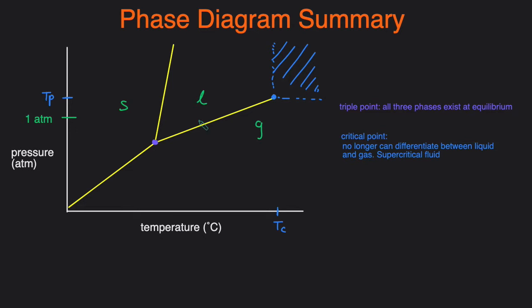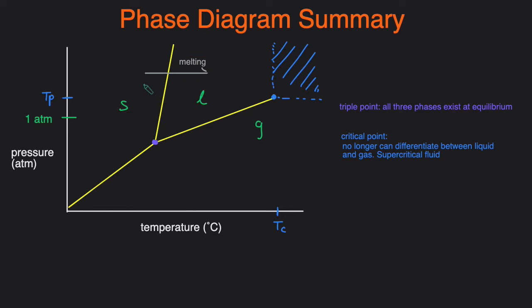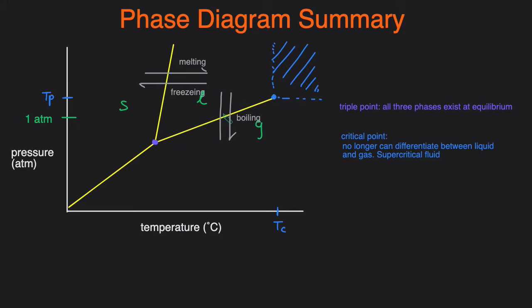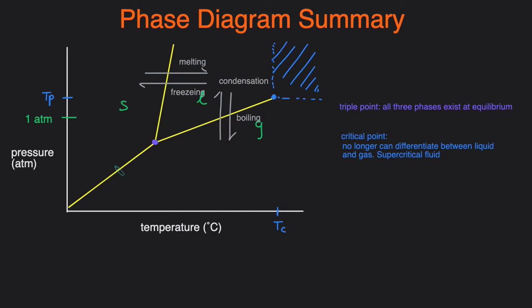You also need to know all the phase changes that can occur. Going from solid to liquid is melting; liquid to solid is freezing. Going from liquid to gas is boiling, also called vaporization; gas to liquid is condensation. And going from a solid directly to a gas phase is called deposition.